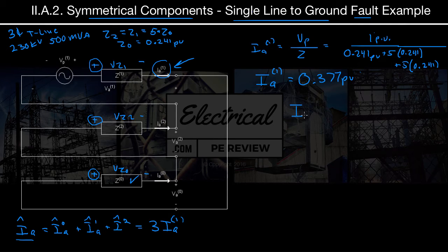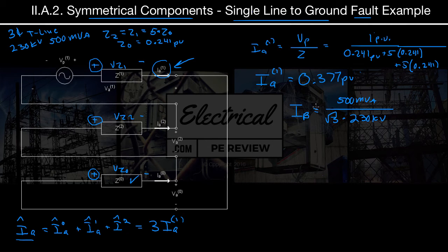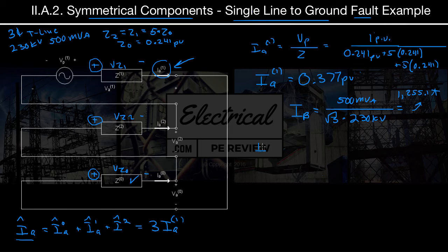To convert to amps we need our base current. Using the three-phase apparent power formula: Ibase equals 500 MVA divided by (√3 × 230 kV), which gives us a base of 1255.1 amps.